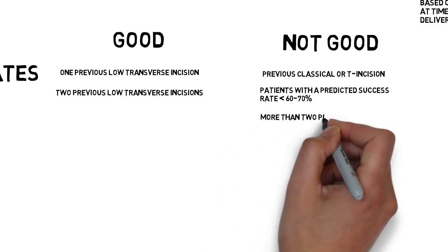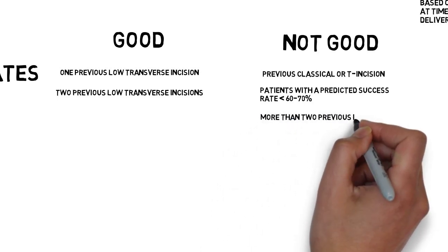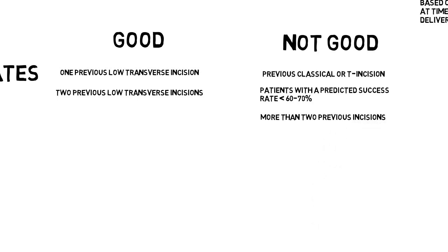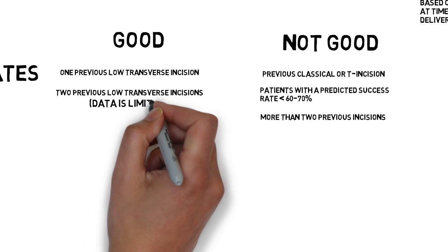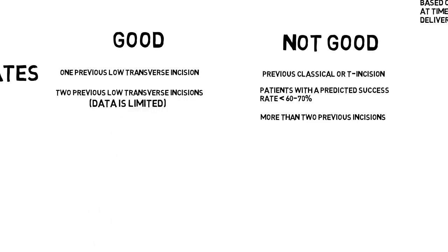The conclusion is that one or two previous C-sections still allow the patient to get into the, quote, good candidate group. Quote, data regarding the risk for women attempting TOLAC with more than two previous C-sections are limited. End quote.